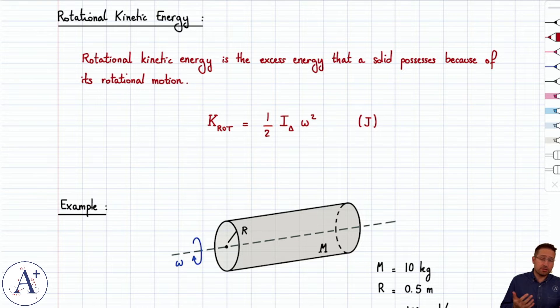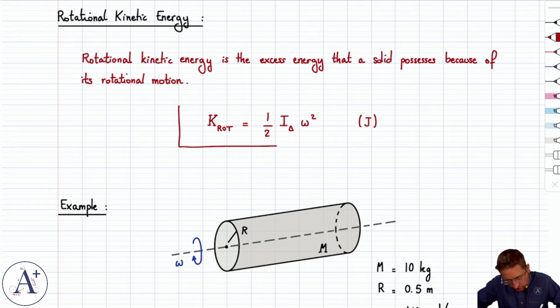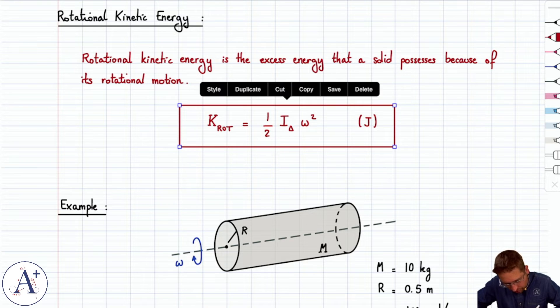But it has nothing to do with rotational motion. So we need to define a new kinetic energy, called the rotational kinetic energy, that is going to measure the excess energy that an object possesses because of its rotation. That kinetic energy is the rotational equivalent of the linear kinetic energy.